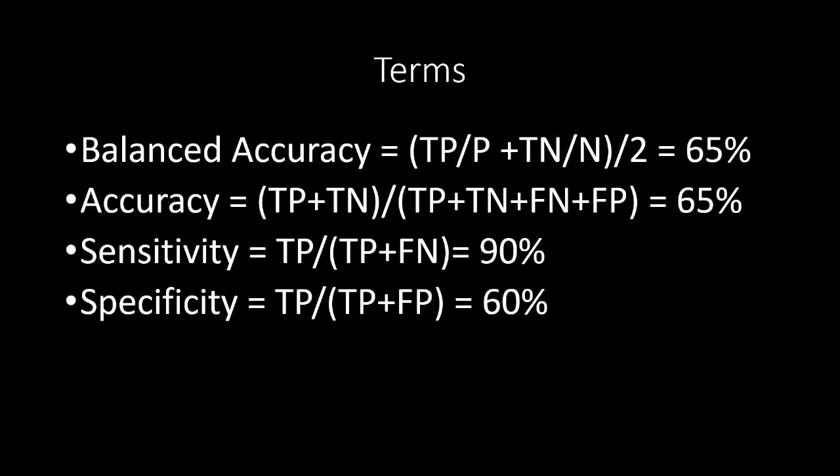Sensitivity is true positive divided by true positive plus false negatives, which equals 90% in this case. And the specificity is the true positive divided by the true positive plus the false positives, which equals 60% in this case. And if you add sensitivity plus specificity together and divide it by two, you'll get the balanced accuracy.